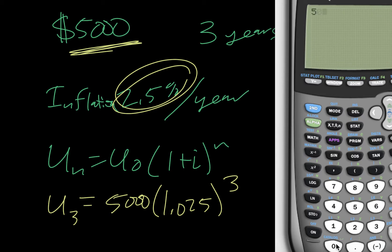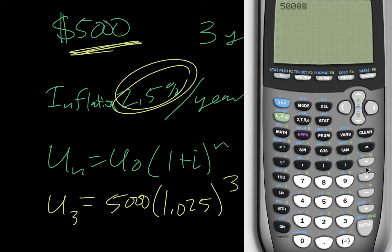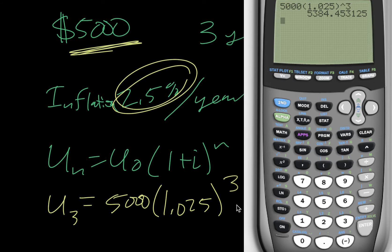So we say 5,000. I'll move this over a little bit. 1.025 raised to the 3, and then we end up with 5,384.45.